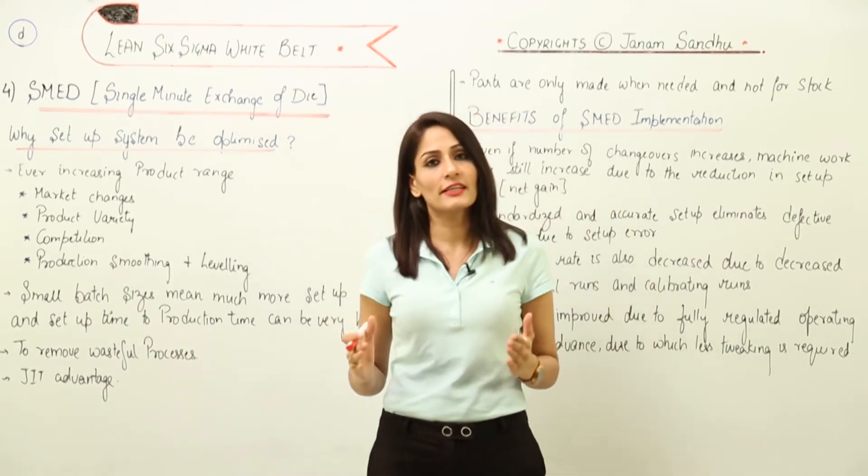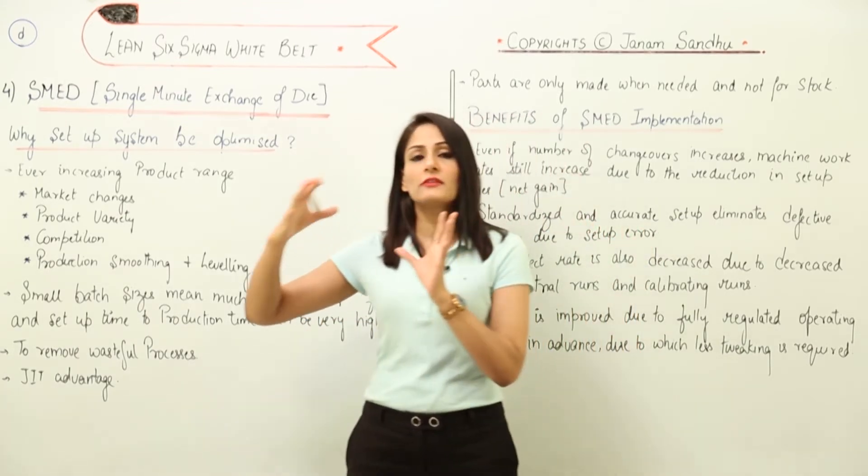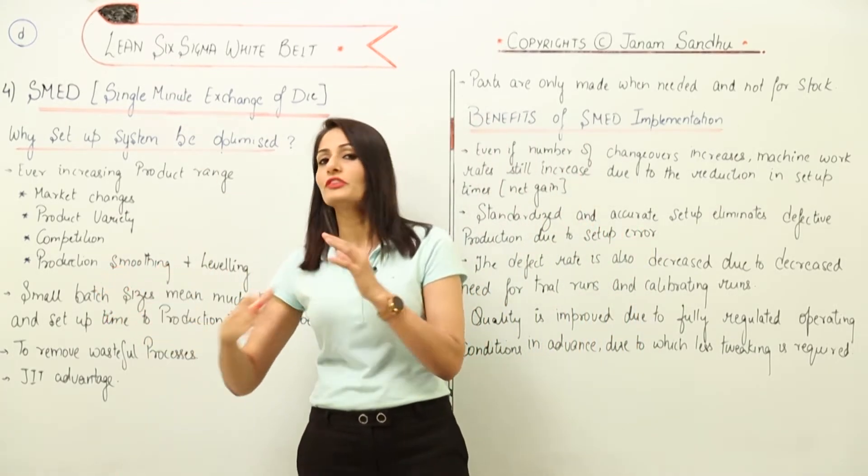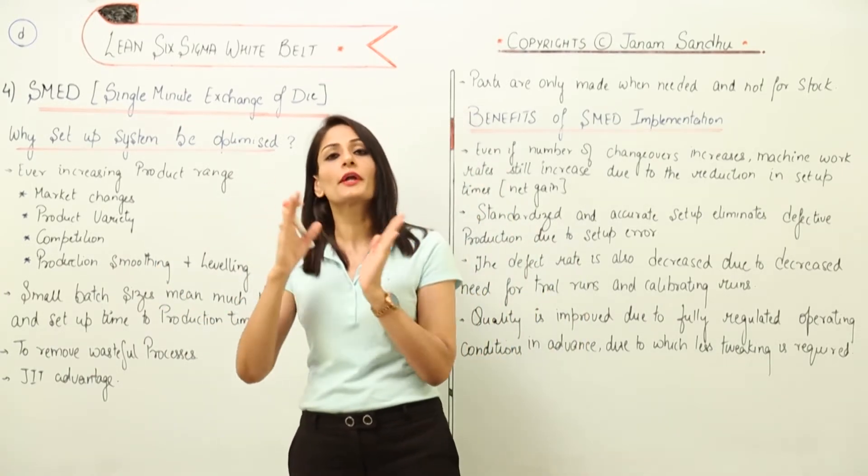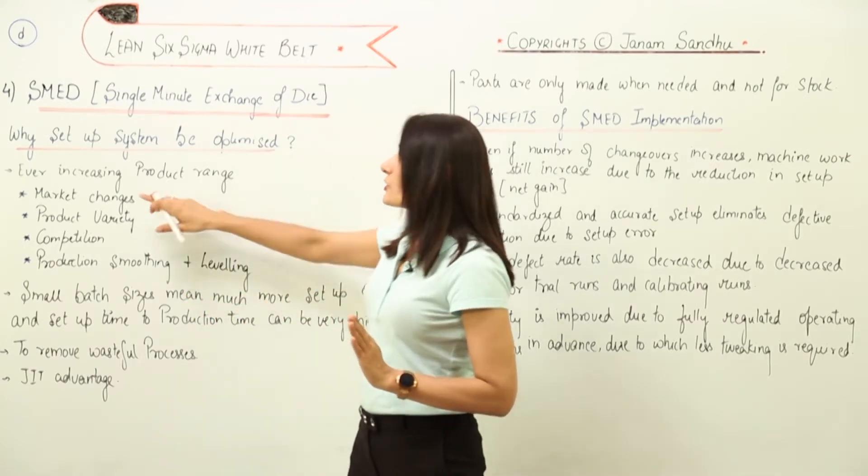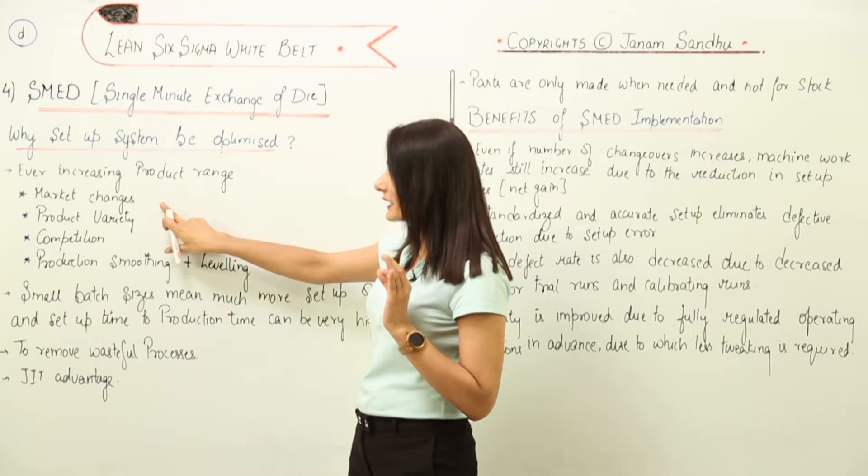We have to see how we need to sustain in the market. We cannot afford to make products in large batch sizes which are not required by the customer. We have to make products according to the requirements of the customer. So ever-increasing product range, market changes.